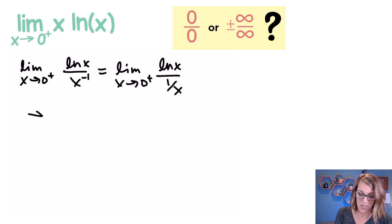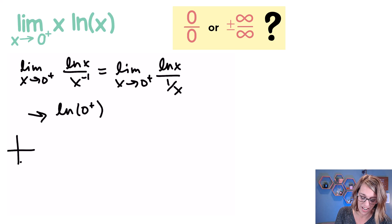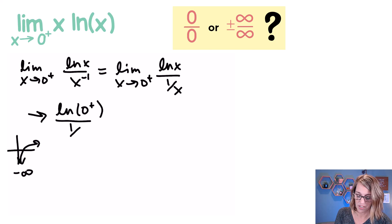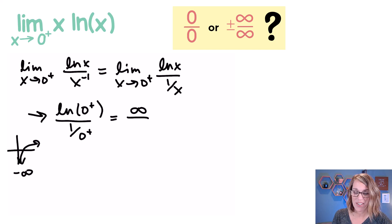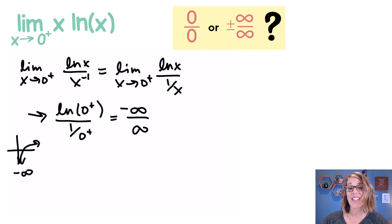Now let's check for that indeterminate form. As x goes to 0 from the right, the natural log of 0 from the right goes to negative infinity. And 1 over 0 from the right — in terms of a limit — also goes to infinity. So we have negative infinity in the numerator and infinity in the denominator, and we end up satisfying that indeterminate form.